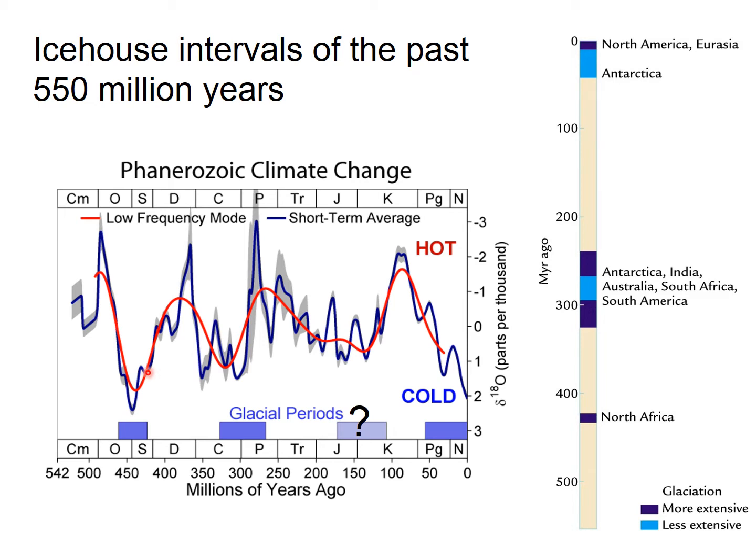So the question is: what is driving these really long-term changes in the state of the Earth's climate? This is important because whether we have a climate that stays cold, stays warm, or oscillates from one state to another is important for changing environmental conditions, which drives things like evolution.